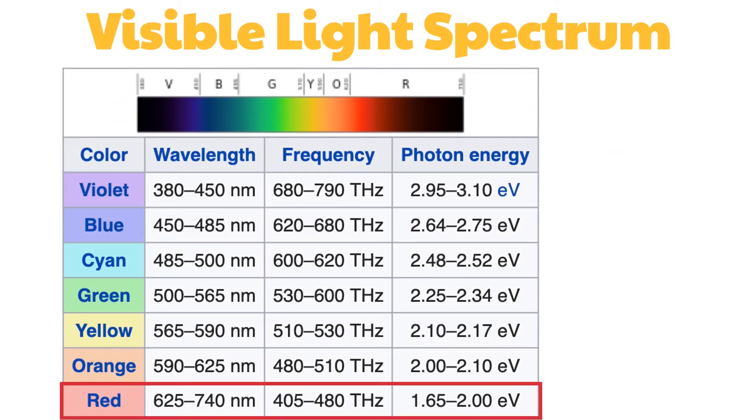Red light has the highest wavelength and the lowest frequency, from a wavelength of around 625 to 740 nanometers and a frequency of 405 to 480 terahertz. Humans perceive the red color.